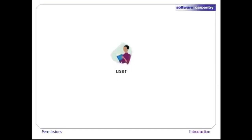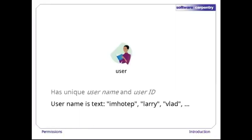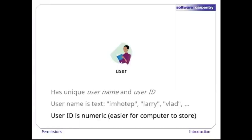Let's start with a single user. She has a unique username and user ID. Her username is textual, and her user ID is an integer. It might seem redundant to have this as well as her username, but integers are easier for computers to work with.